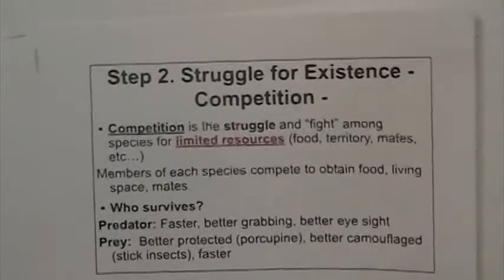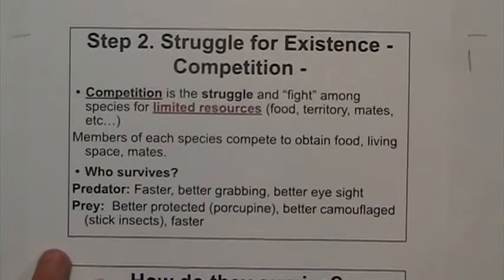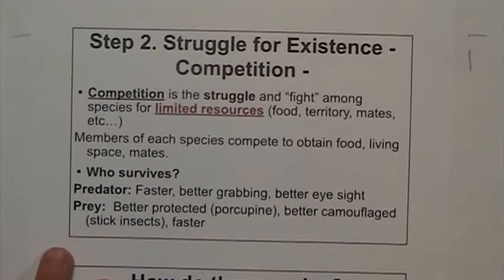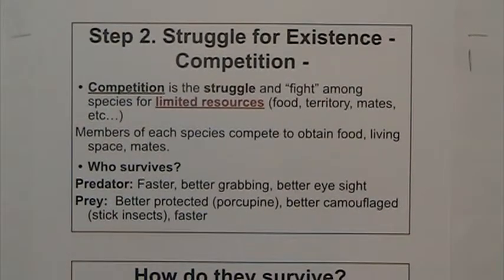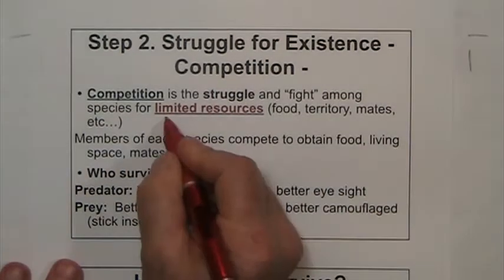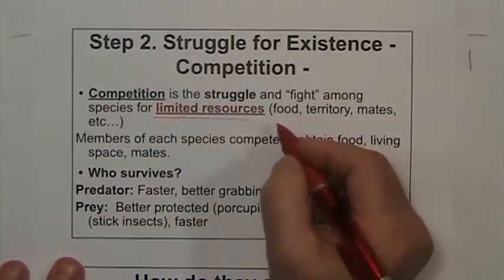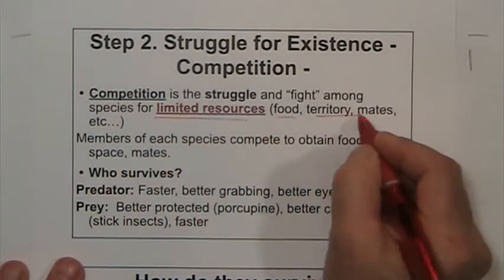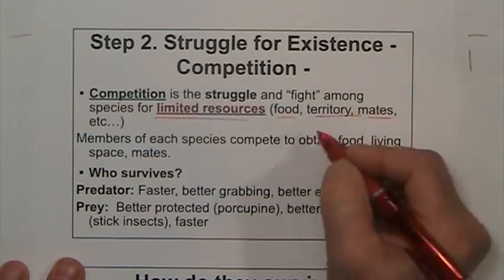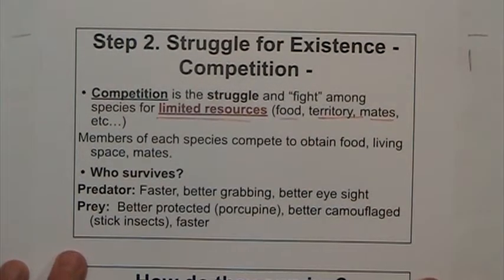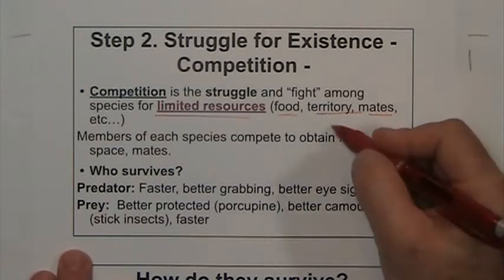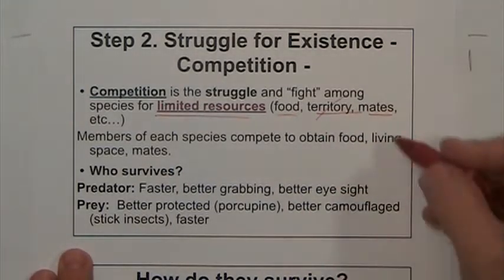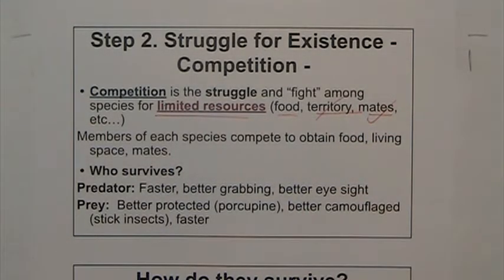So all that about variations — step one. Let's move on to step two very quickly: the struggle for existence. This is all about competition, because we know that resources are limited — food, territory, mates, water. Don't always think it's just food; territory and mates are important factors.